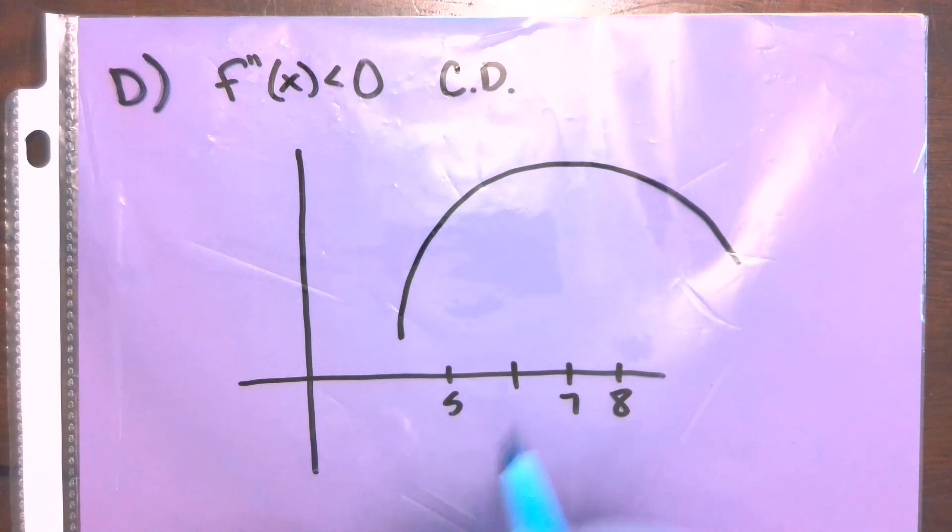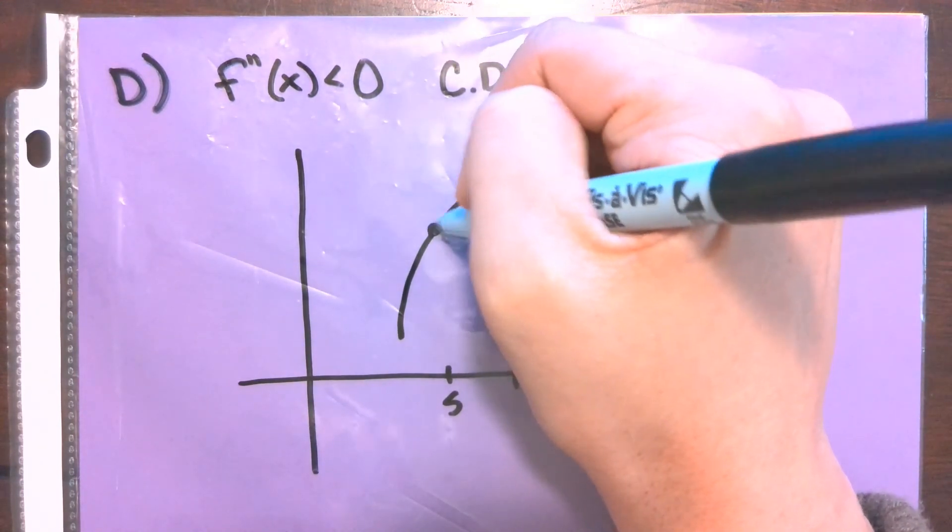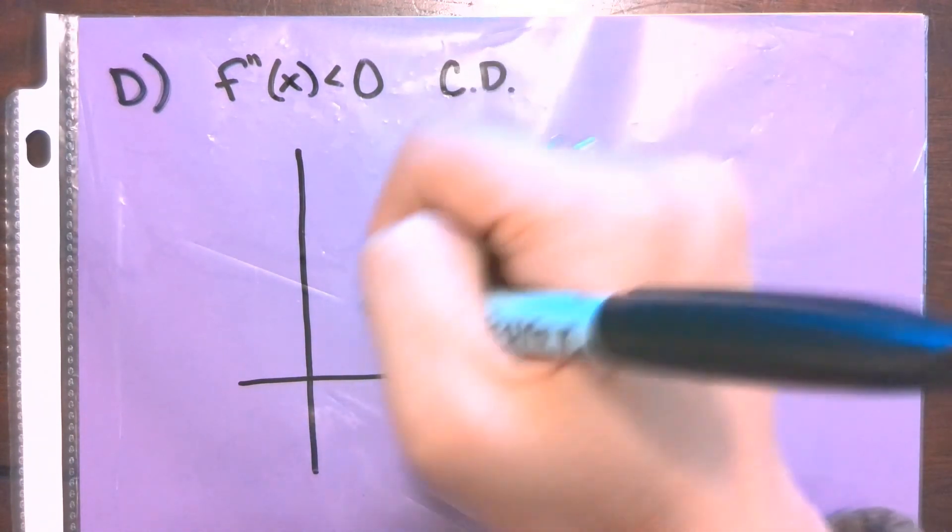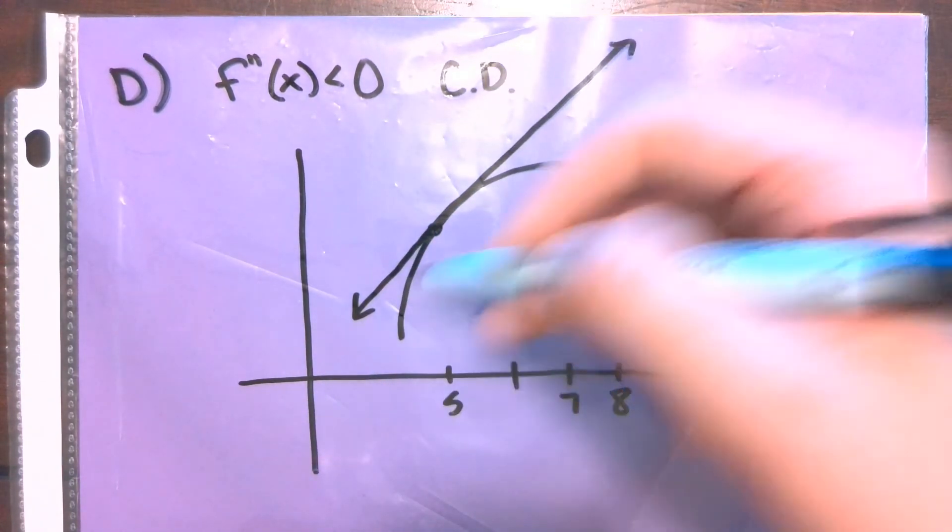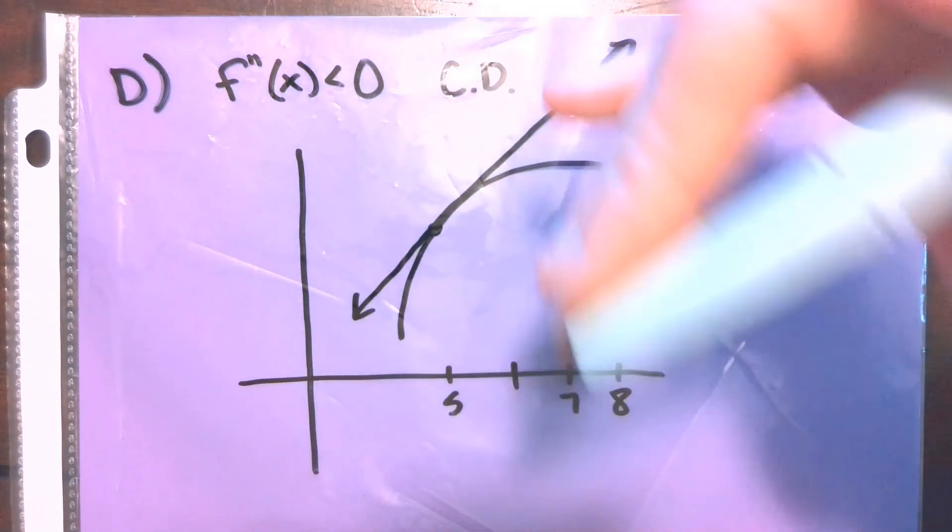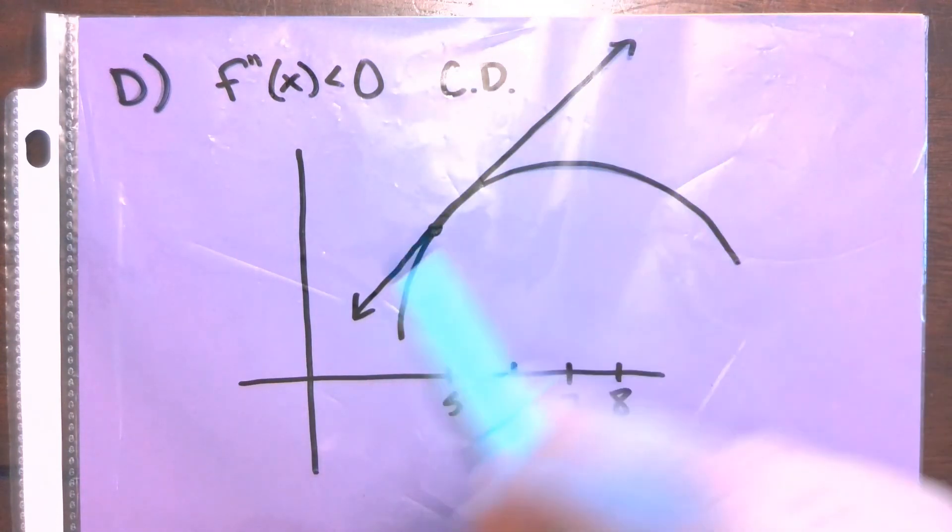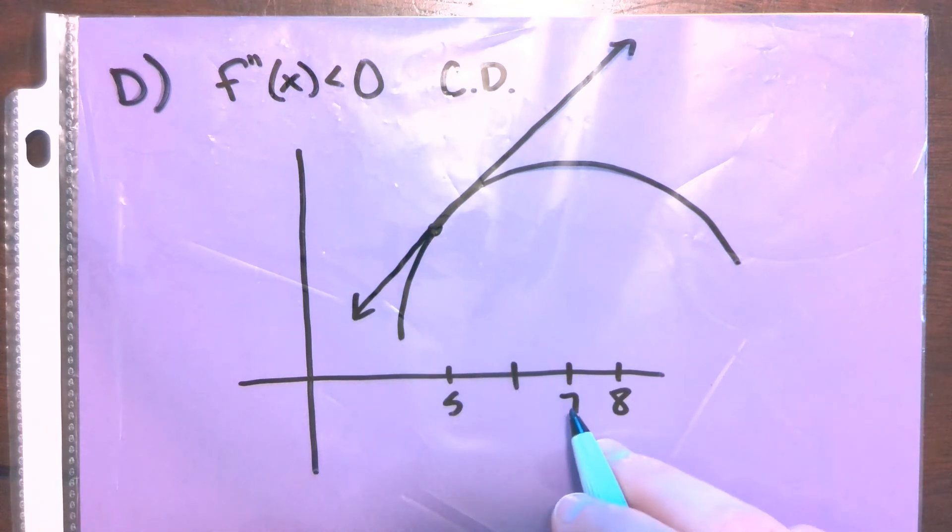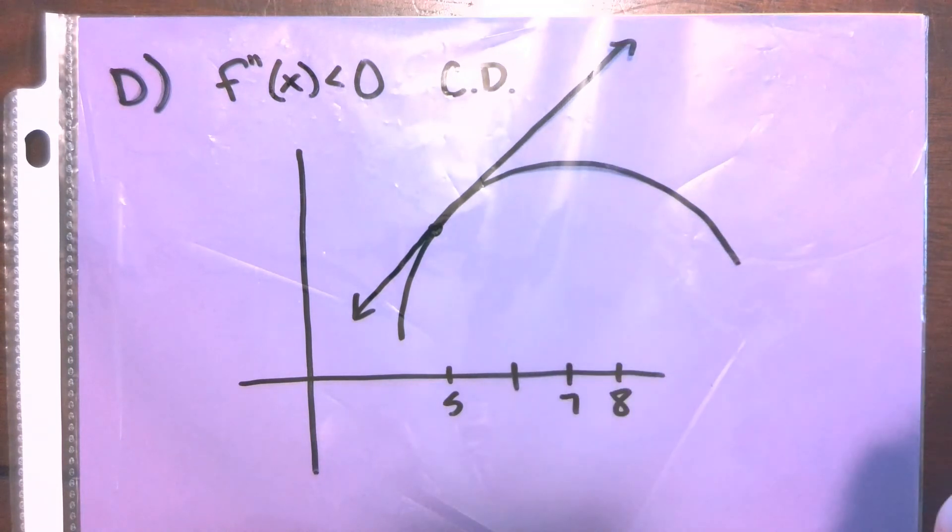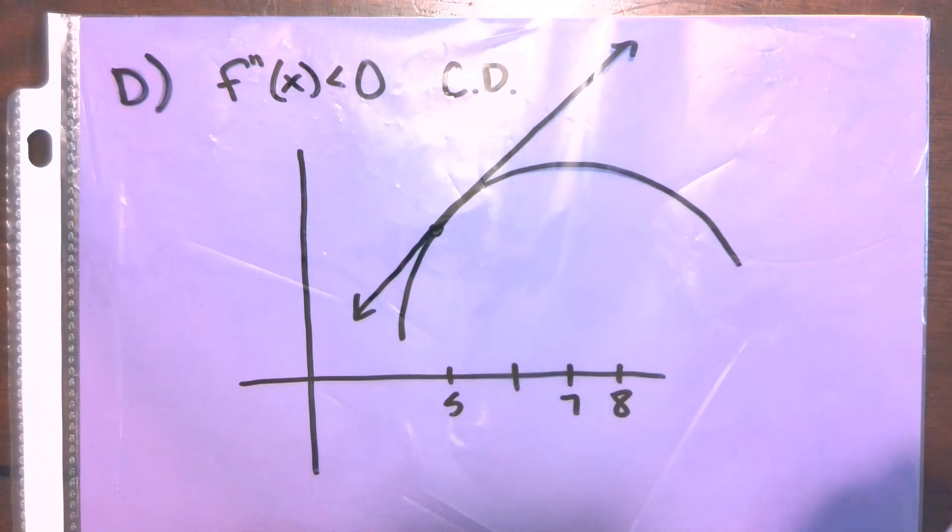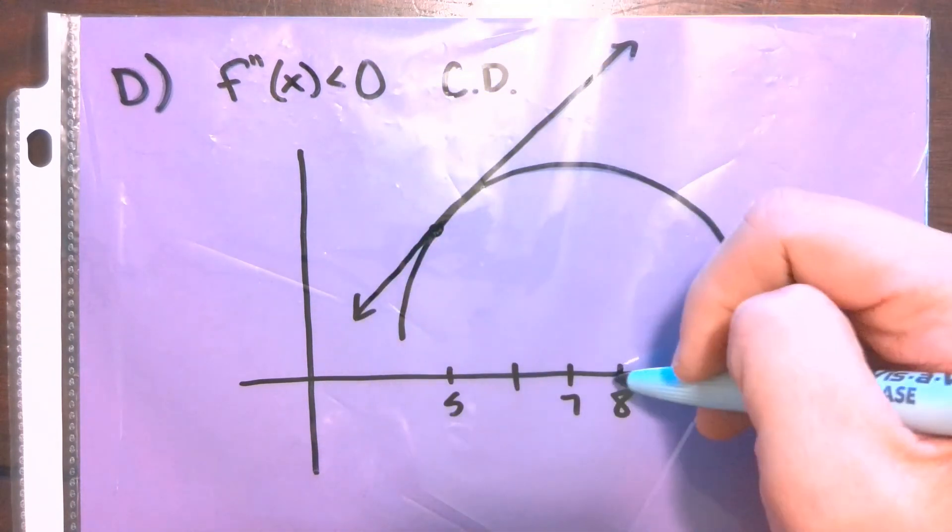So one important thing about it being concave down here is that any tangent line, so we're going to be talking specifically about 5, but any tangent line along this 5 to 8, since it's concave down, it is going to be above f of x. So that means that if we use the tangent line to approximate in a minute f of 7, that our approximation is going to be above f of 7's actual value.